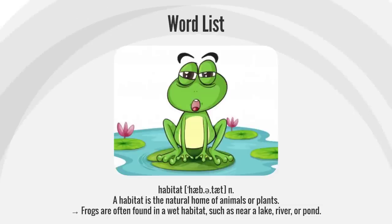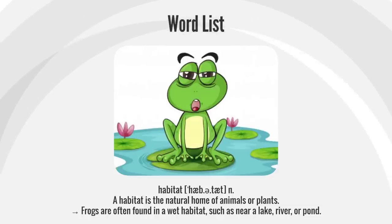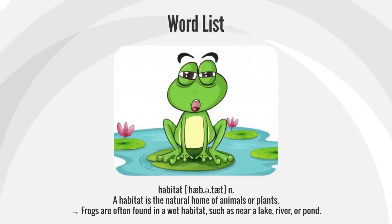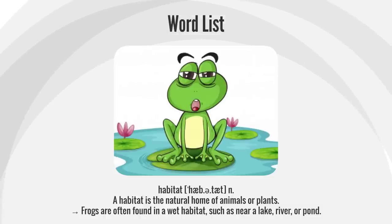Habitat. A habitat is the natural home of animals or plants. Frogs are often found in a wet habitat, such as near a lake, river, or pond.